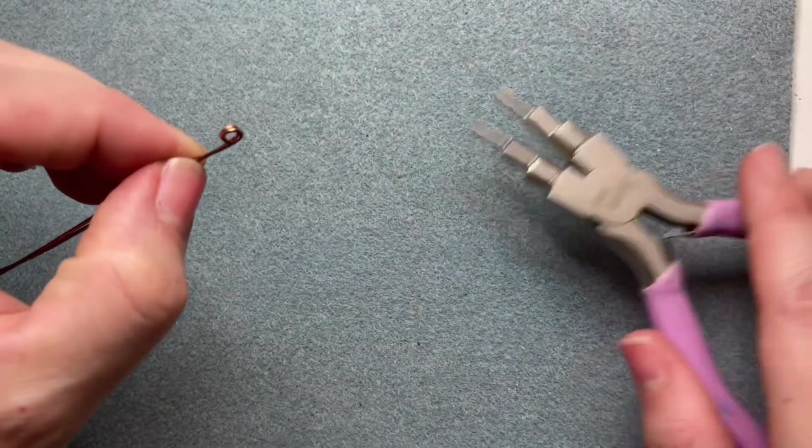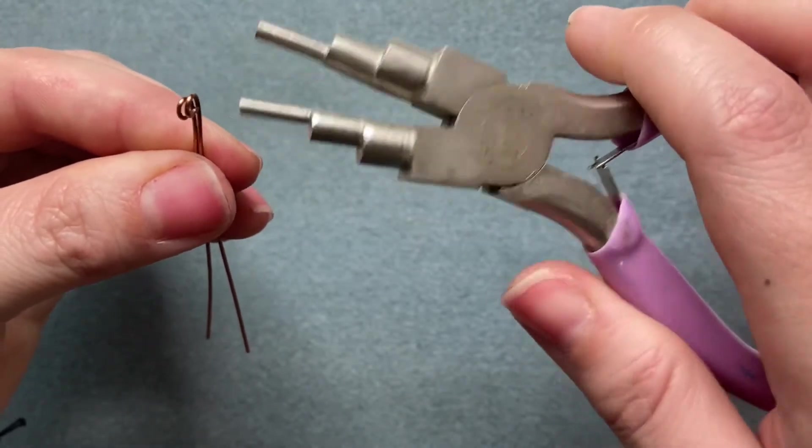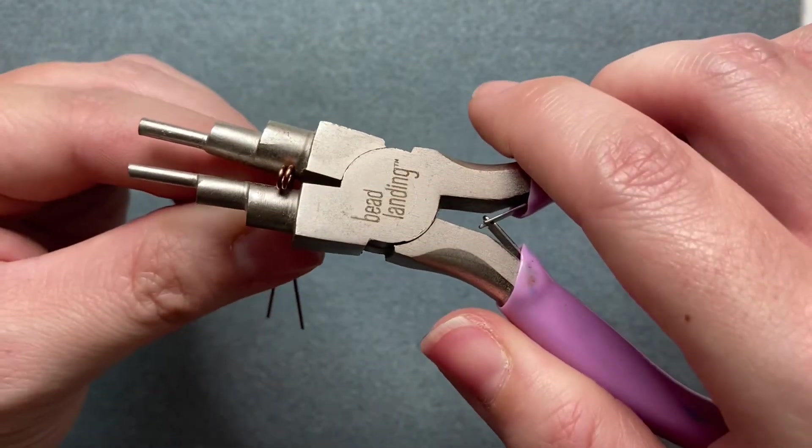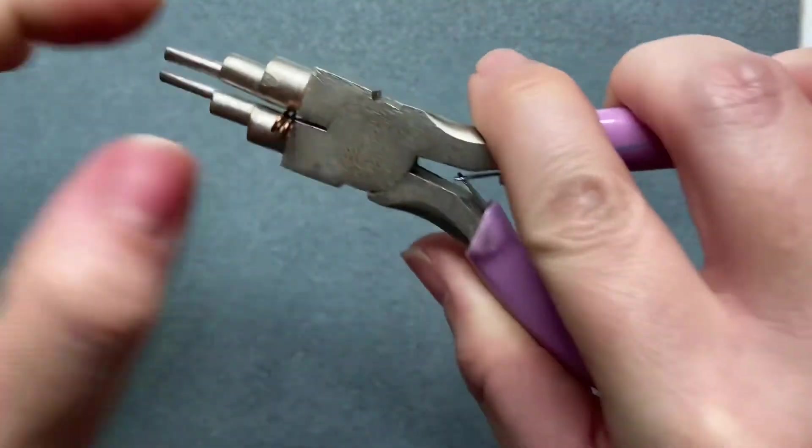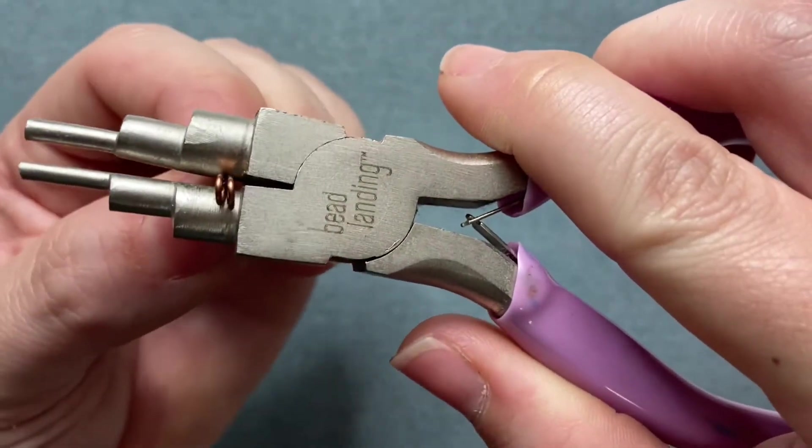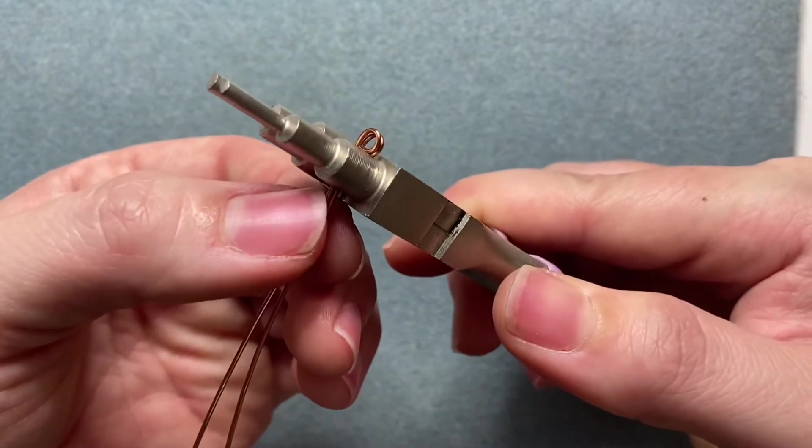So take your two pieces of wire and put the loops together and place them towards the back of your bail shaping plier like so, together.